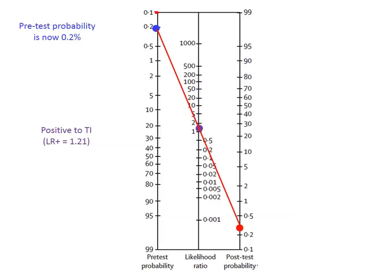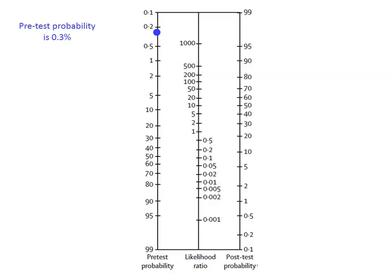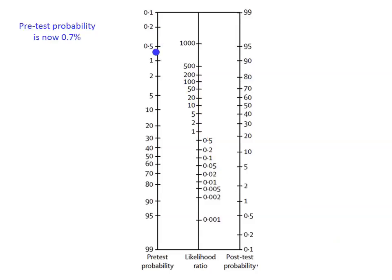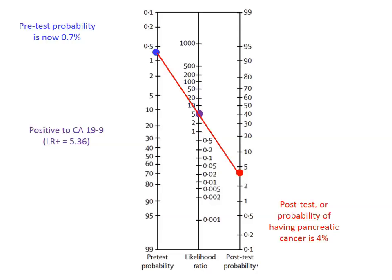Next we assess whether or not they're a smoker — plotting that through increases probability a little more to 0.3%. The next test starts at 0.3% and has a likelihood ratio of 3.4, so we're building up probability, still not a whole lot but definitely trending one way. Now that the patient has tested positive to three tests, we order our blood test — a cancer antigen test — and testing positive to that gives us a significant increase from 0.7% to 4%.